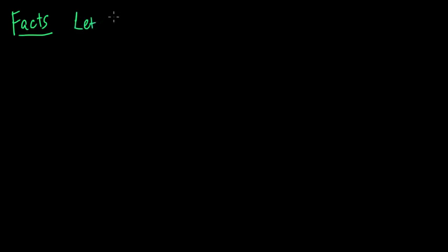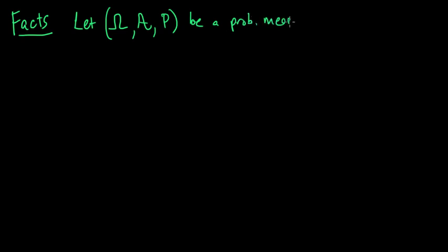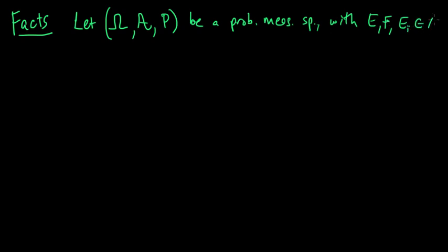We're going to take some omega with a sigma-algebra and probability measure. So we'll let (Ω, A, P) be a probability measure space, and we're going to fix this and use the same one for all the facts. Whenever I write E, F, or Eᵢ, these are all going to be sets in this sigma-algebra.